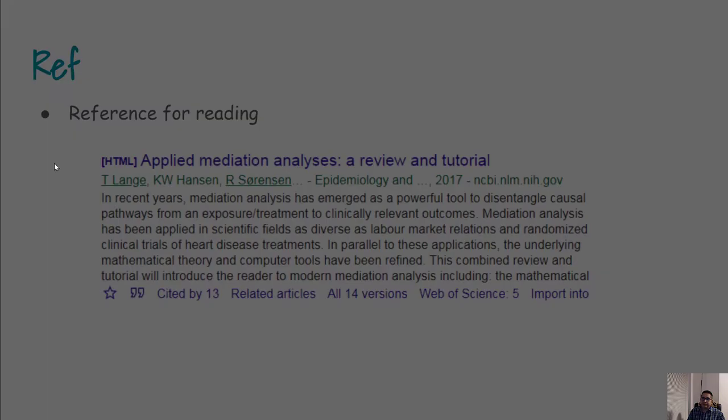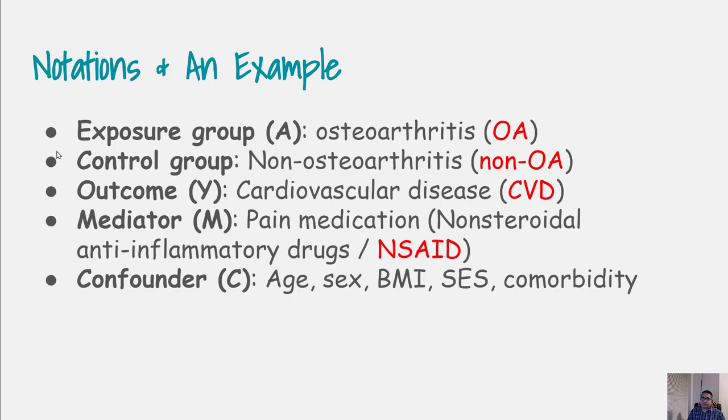Before doing the analysis, let us get familiar with the notations with an example. For example, the exposure group in our example is osteoarthritis patients where we define exposure group as A. That means A=1 would be the exposure group, A=0 would be non-exposure group or those who do not have osteoarthritis. The control group is basically A=0, and these non-arthritis patients are going to be in the control group.